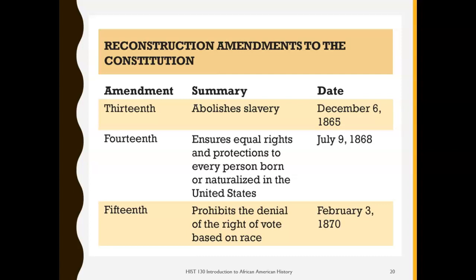This table summarizes the three most important constitutional amendments passed during Reconstruction. First, the 13th Amendment abolished slavery, passed in 1865. Next, the 14th Amendment made African Americans American citizens, passed in 1868. Finally, the 15th Amendment gave African American men the right to vote, passed and ratified in 1870.